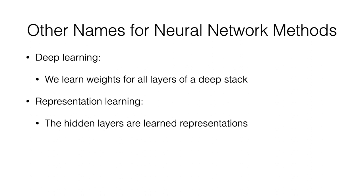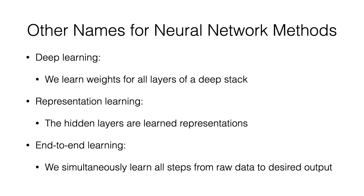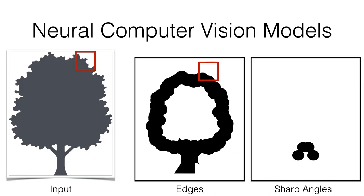Another name is representation learning — one of the key ideas is that the middle layers are representations of the data that you're essentially trying to learn. Then there's end-to-end learning, which contrasts with the older approach where people would take raw input, manually engineer it into a more useful representation, and then learn from that. End-to-end learning says: let's just do learning for everything, all the way from the raw input to the output, all at once.